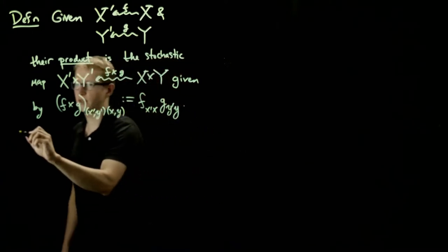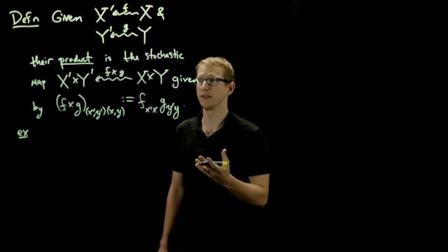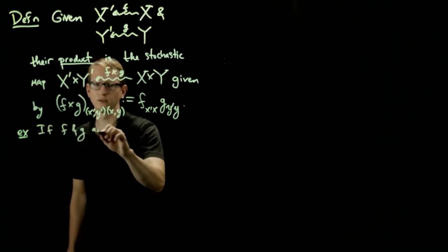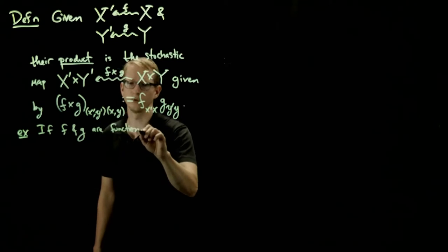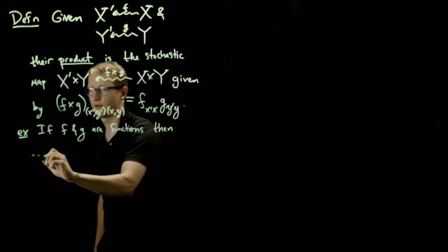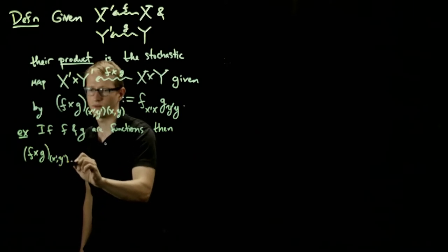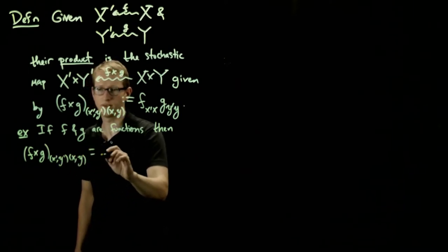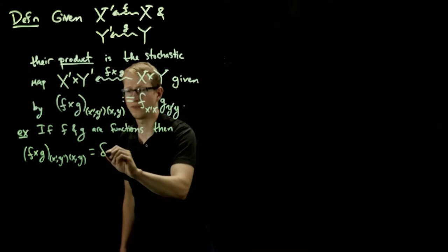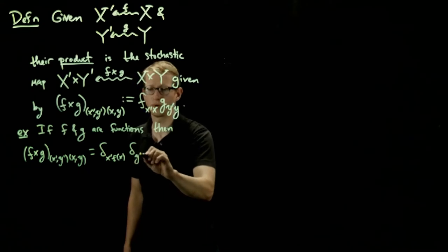And let's just make sure that this coincides with our usual definition of Cartesian product when we specify that these stochastic maps correspond to functions. So if F and G are functions, or how I think of them as being deterministic, then this product is given by, well, we know what happens when these are functions, then we use the Kronecker delta, and this is δ(x', f(x)), while this is δ(y', g(y)).